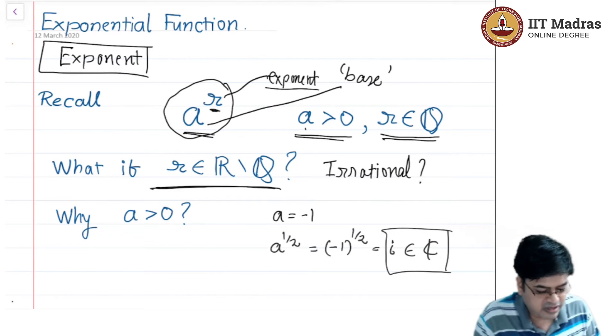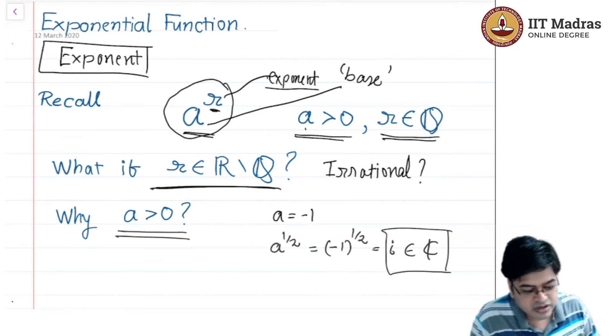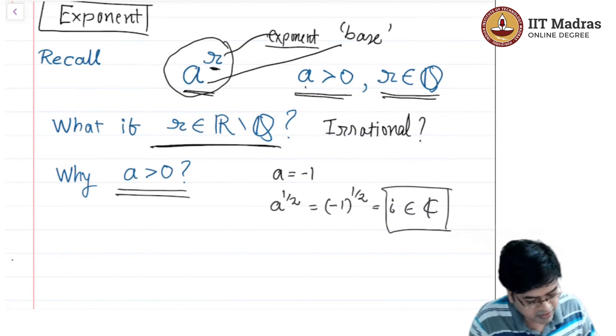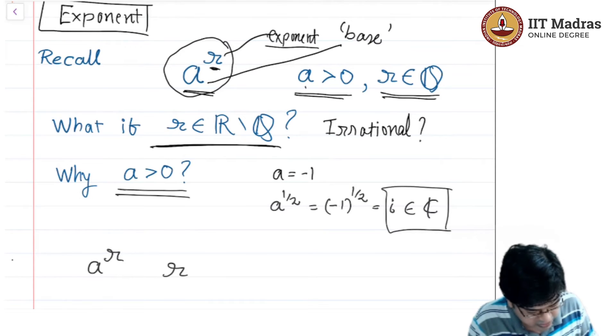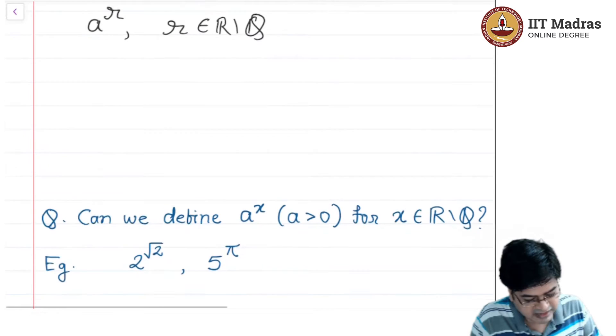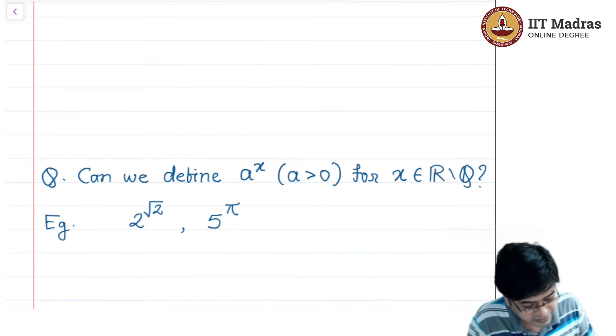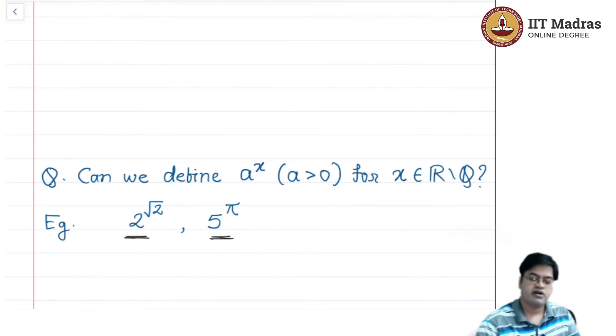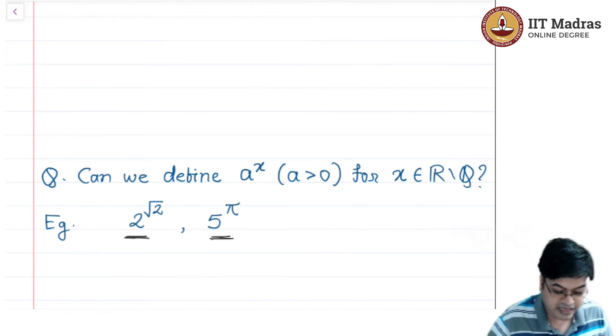I do not want to define a to be less than 0, so a less than 0 is eliminated. Now the question is a is greater than 0 and r belongs to irrational numbers, where r belongs to R minus Q. What will happen in this case or how will I define this? To be precise, can I define 2 raised to square root of 2 or 5 raised to pi? In this case, there is no direct way to answer this question, but I will definitely have a calculus-based strategy to answer this question.